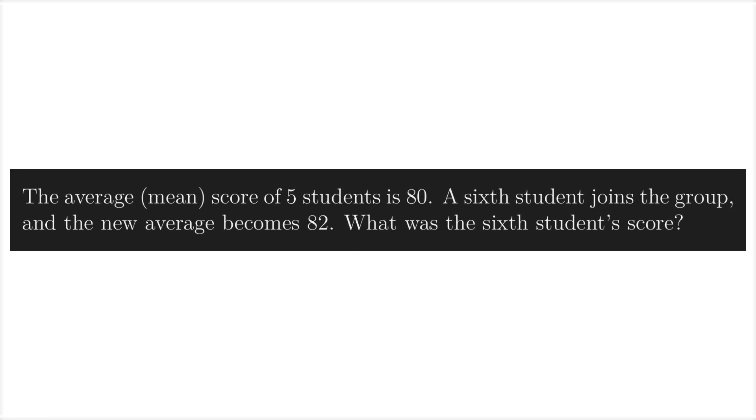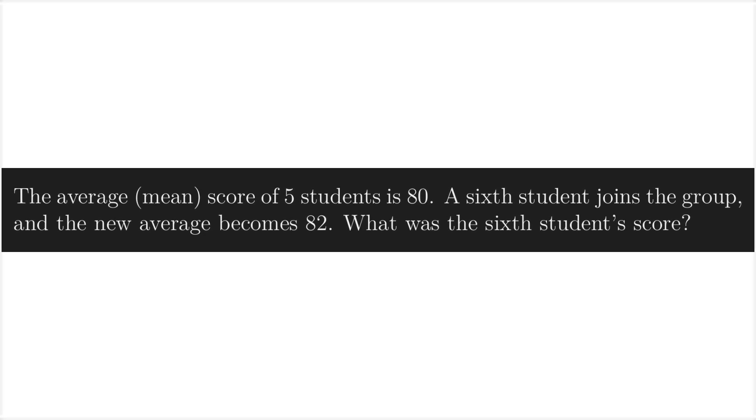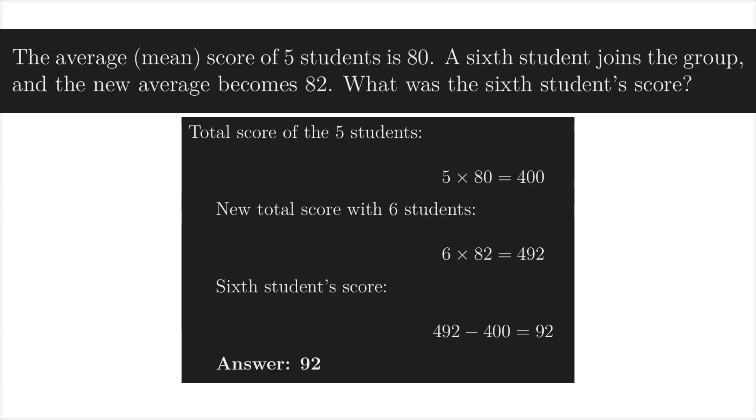The average score of five students is 80. A sixth student joins the group, and the new average becomes 82. What was the sixth student's score? We first figure out the total score for five students, do the same for six students, and then subtract.